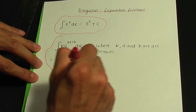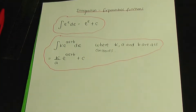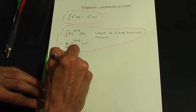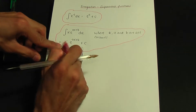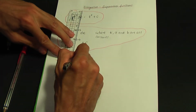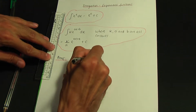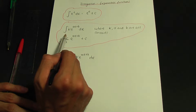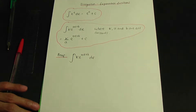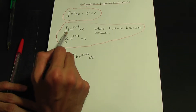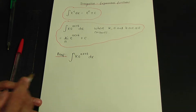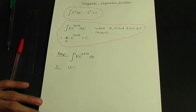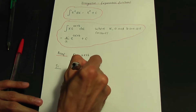Let me show you where this result comes from. It is derived using substitution. So let me go through this proof. We're integrating k·e to the power of ax plus b. The result is only valid if k, a, and b are constants and if the power is of the form ax plus b. In step one, we're going to use substitution, taking u as ax plus b, which is the power.